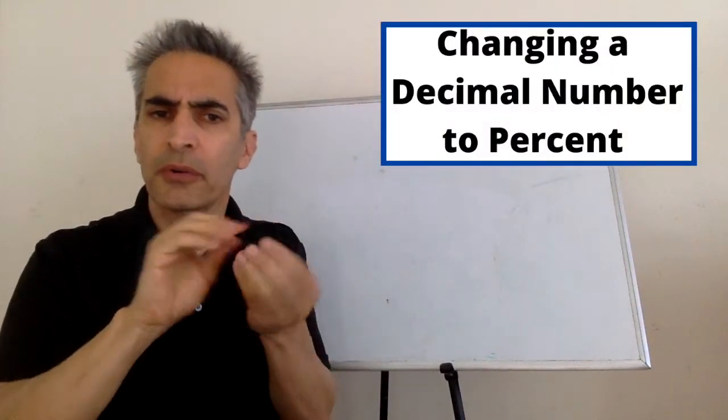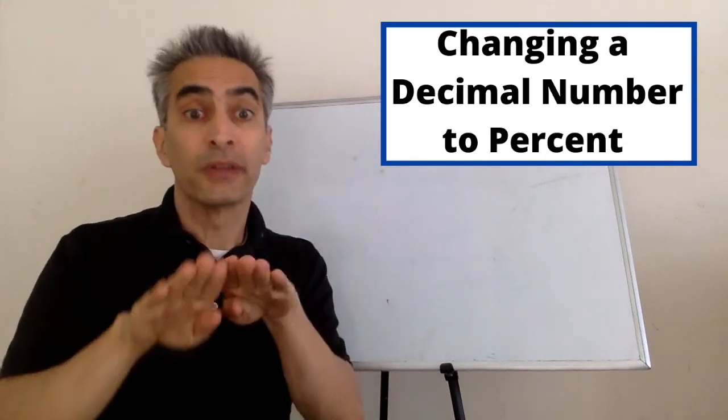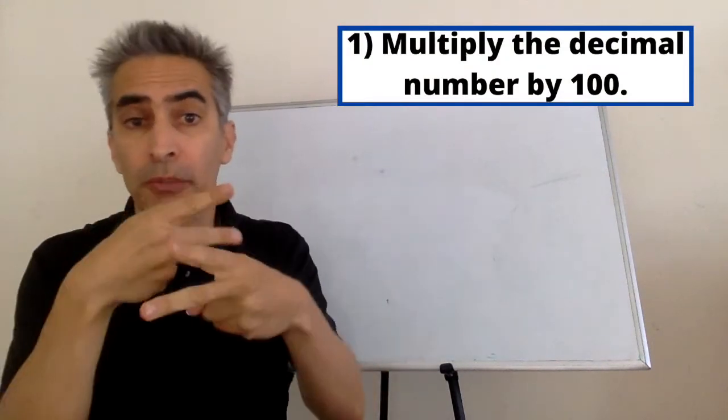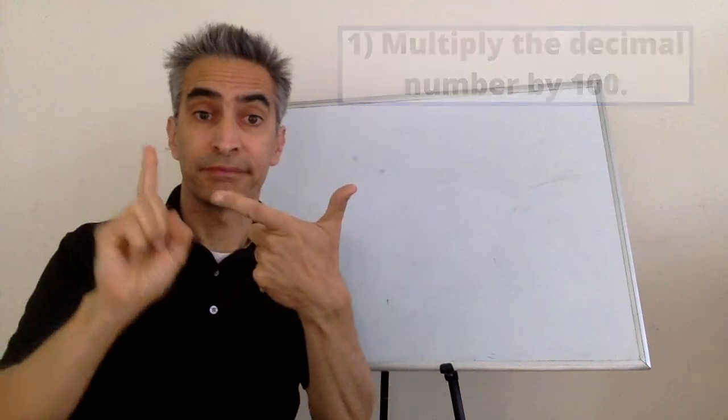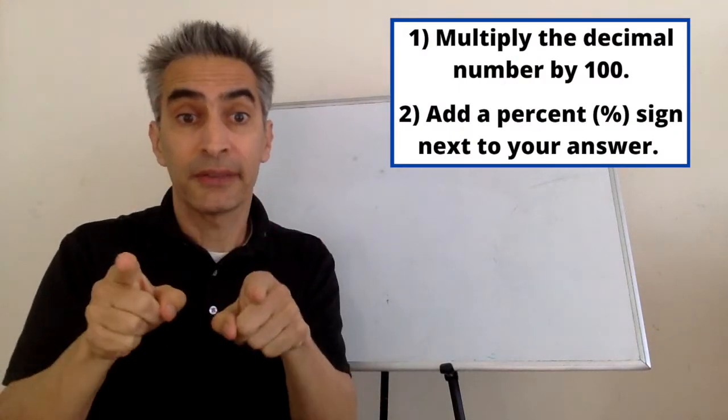How do you change a decimal number to a percent? There's two steps. The first step is to multiply the decimal number by 100. The second step is to add a percent sign next to your answer.